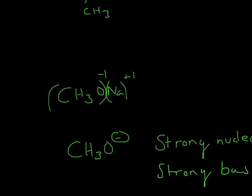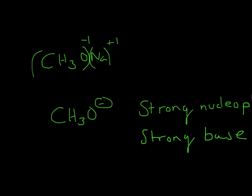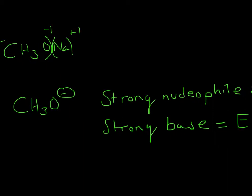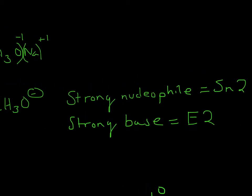CH3ONa — Na is just a metal with a plus charge, so therefore the CH3O has a minus charge. That means we can usually ignore the Na, so it'll just be CH3O⁻. CH3O⁻ is a strong nucleophile and a strong base.